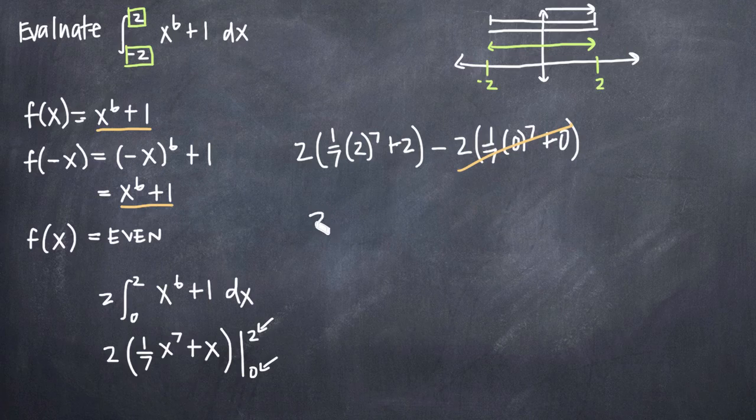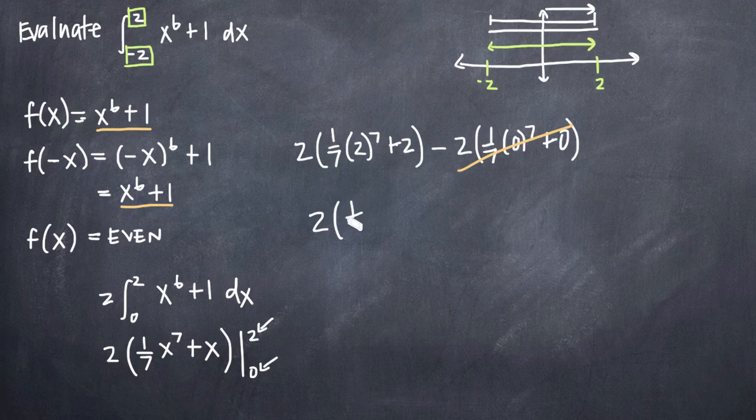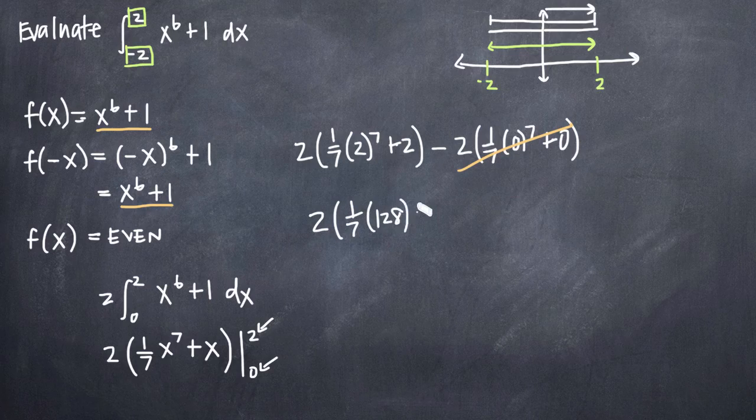And in the first term here, we'll have 2 times 1/7th times 2 to the seventh, which is 128 plus 2.